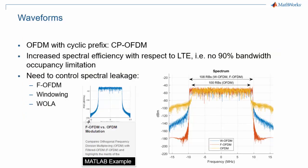5G NR defines the waveform to be OFDM with cyclic prefix. It also decreases the guard band for the waveform, which means that 5G waveforms are not limited to 90% of the bandwidth as they are in LTE. As in LTE, the standard does not specify any particular technique to limit the bandwidth and spectral leakage. Several well-known techniques such as filtered OFDM or windowed OFDM have received a lot of attention, and you can try them out easily with an example that ships with MathWorks Communication System Toolbox.